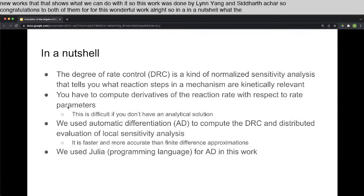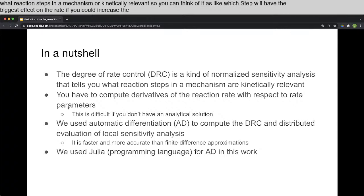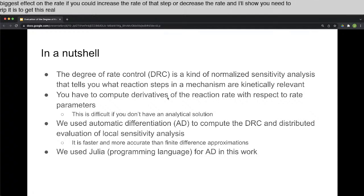the degree of rate control is kind of a normalized sensitivity analysis that tells you what reaction steps in a mechanism are kinetically relevant. You can think of it as which step will have the biggest effect on the rate if you could increase or decrease the rate of that step. You need derivatives to get this sensitivity, and you have to take the derivative of the reaction rate with respect to rate parameters.